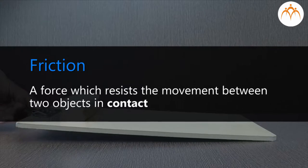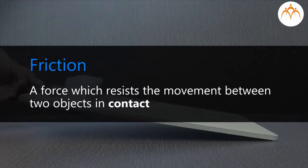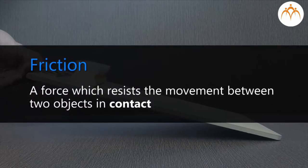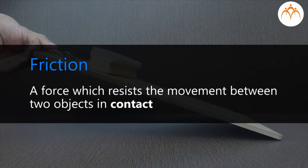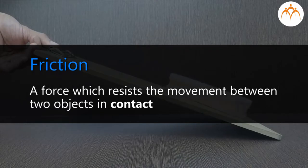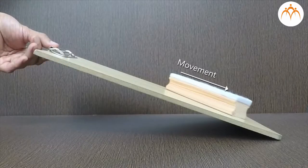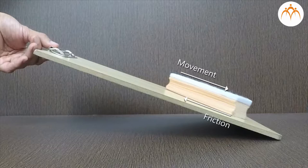When two objects in contact move relative to each other, there is a force which resists the movement. This force is called friction. Frictional force acts in a direction opposite to the movement. If movement is in this direction, then frictional force will be in this direction.